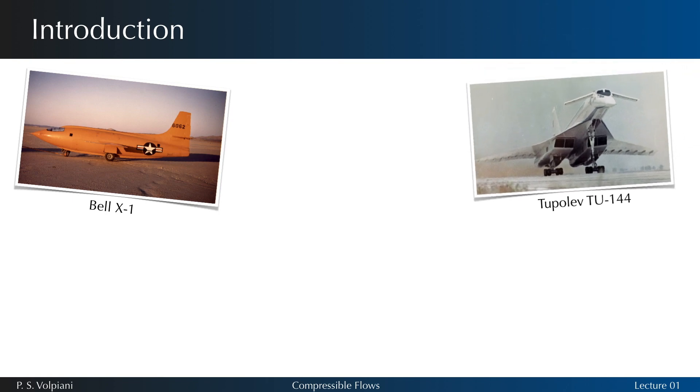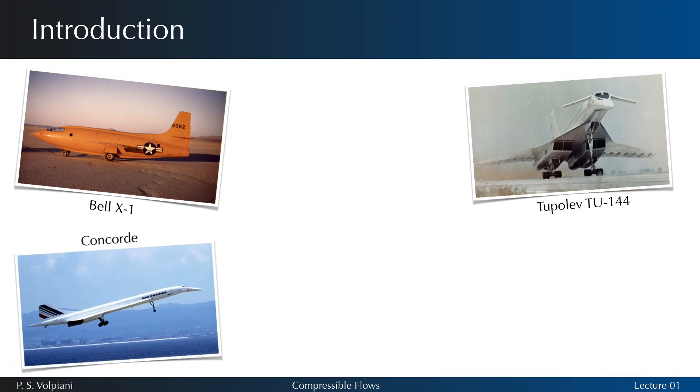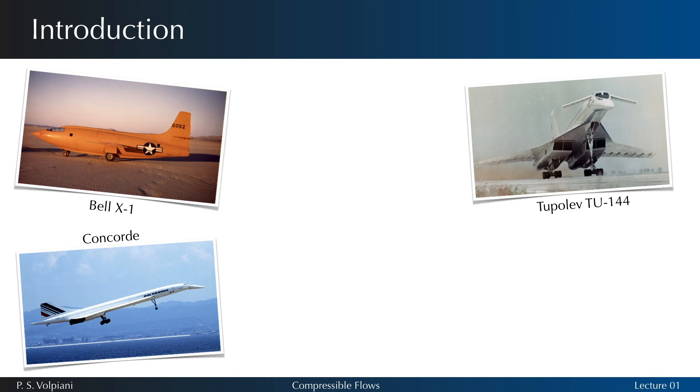The first supersonic transport was the Soviet Tupolev Tu-144, which had its first supersonic flight in June 1969 and began flying mail between Moscow and Alma-Ata in 1975. The first supersonic passenger-carrying commercial airplane, the Concorde, was jointly developed and manufactured by aircraft manufacturers in Great Britain and France. It made its first transatlantic crossing in 1973 and entered regular service in 1976. It continued flying for the next 27 years until British Airways and Air France decided to stop the service due to high costs in 2003.